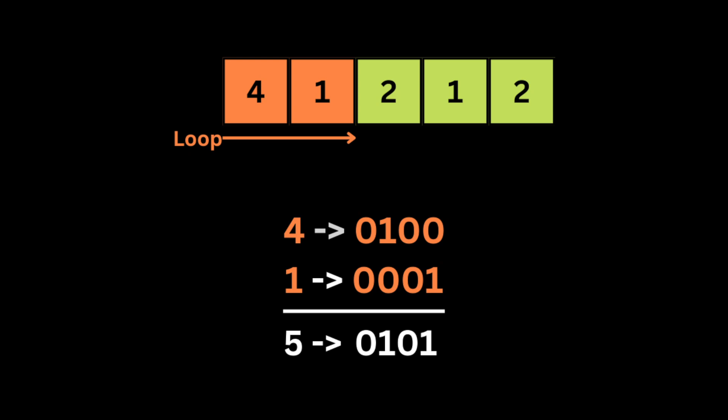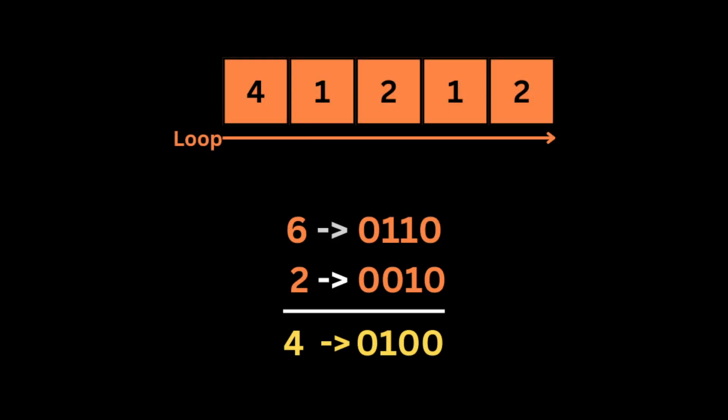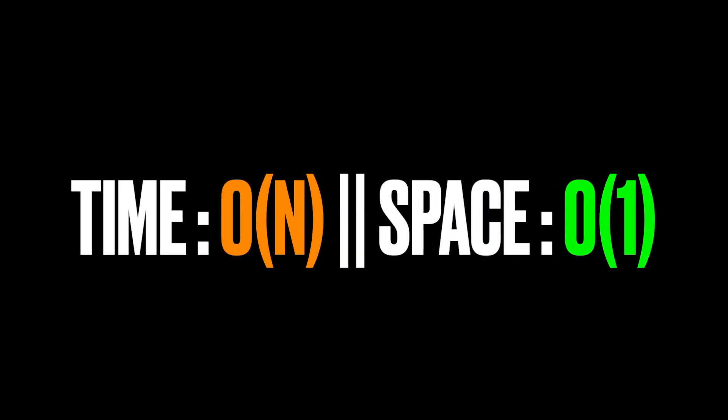With our input array, we loop through and perform XOR at each step. For example, XORing 4 and 1 in binary: bit by bit we get the result 5 in binary. We continue applying XOR across all numbers. Since every number appears twice except one, all pairs cancel each other out — XOR of identical numbers is 0. The only number left is the unique one, which is 4.